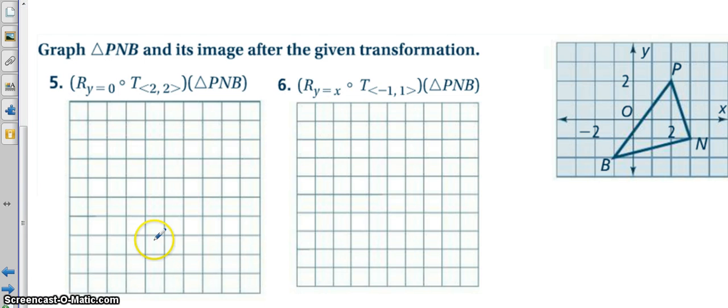So, now we have to remember our notation rules. So, if I read this notation, it's a reflection, because it's capital R, about the line Y equals 0. Then, we have to look at this as being a translation 2 to the right and 2 up. So, the reflection happens after the translation.